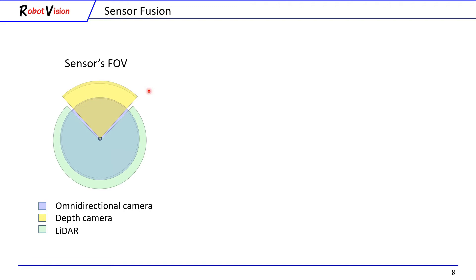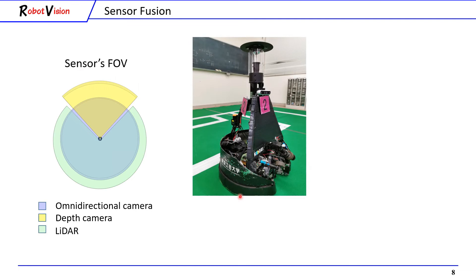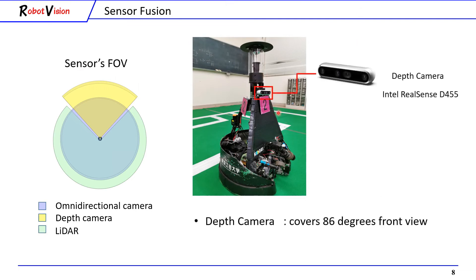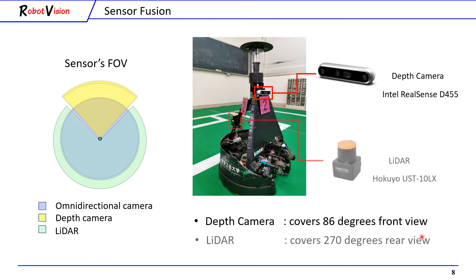This figure represents each sensor's field of view. On the actual robot, the depth camera is placed to cover the 86-degree front view, and the lidar is placed to cover the 270-degree rear view. Although this system has a blind zone of some degrees that cannot be covered.